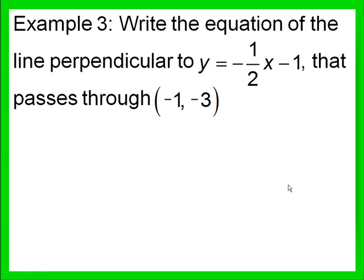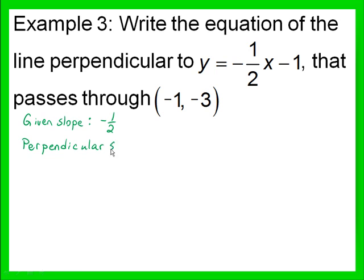Example 3: Write the equation of the line perpendicular to y equals negative 1 half x minus 1 that passes through the point negative 1, negative 3. The given slope is negative 1 half. The perpendicular slope is the negative reciprocal of negative 1 half — so I flip negative 1 half and change the sign, and I get 2 over 1, or just plain old 2.